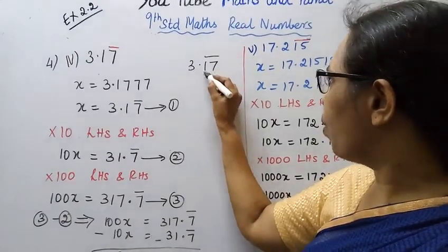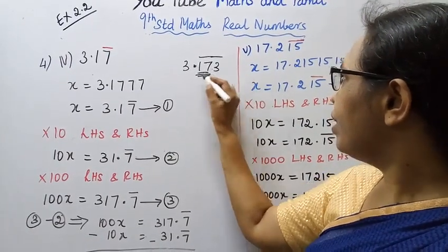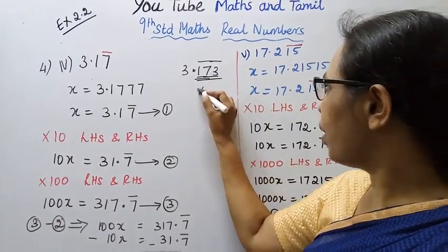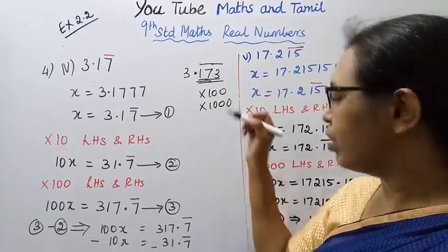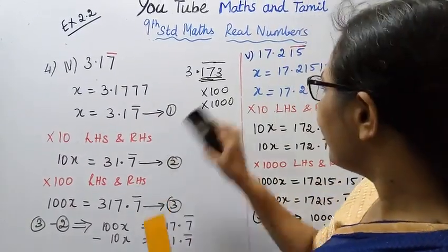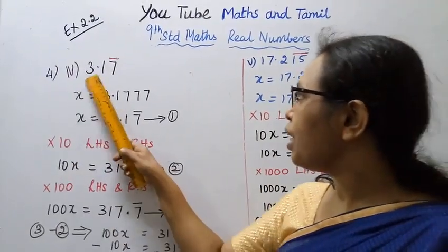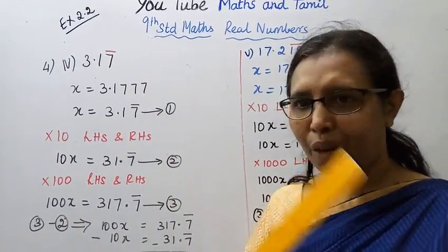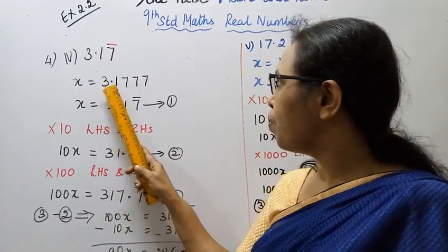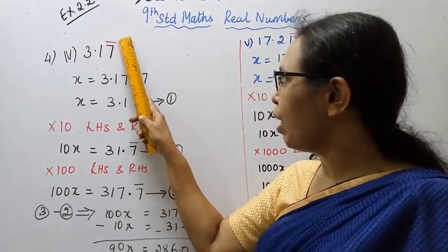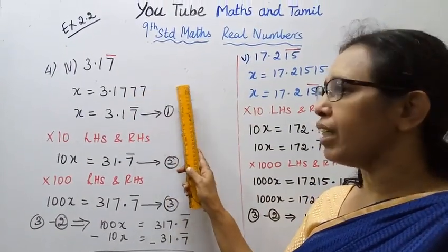Then, suppose x equals 3.17 bar. This is a non-terminating, non-recurring... recurring expansion. The repeating digit is 7. So let x equal to 3.17 bar. There are 2 decimal places before the bar, and 1 decimal under the bar. 2 decimal multiply by 100, 3 decimal multiply by 1000.